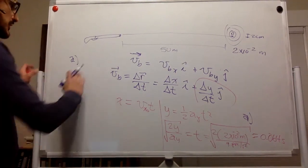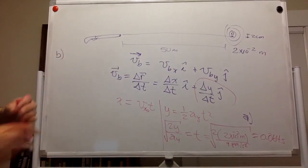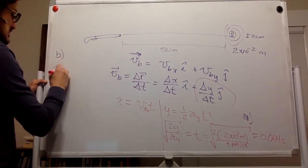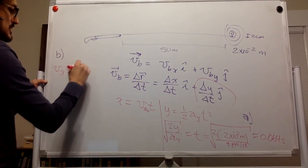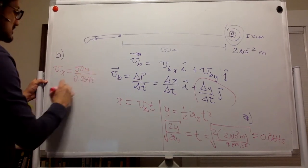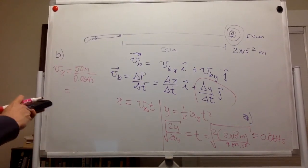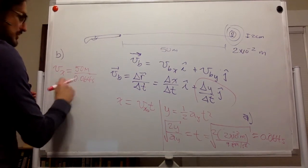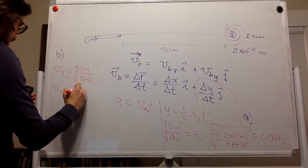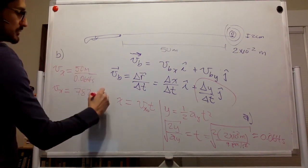For part b, we want the horizontal velocity. It's going to be 50 meters divided by 0.064 seconds, which equals approximately 782.6 meters per second.